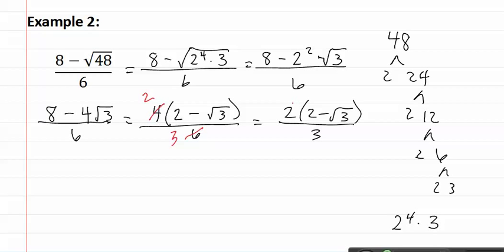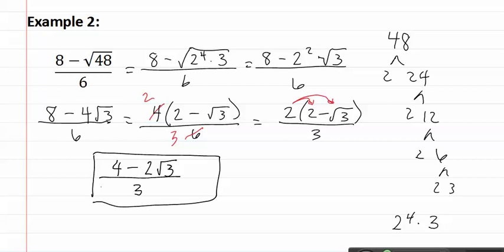This isn't complete. We first must distribute any extra pieces back in, giving you four minus two root three over three as your final answer.